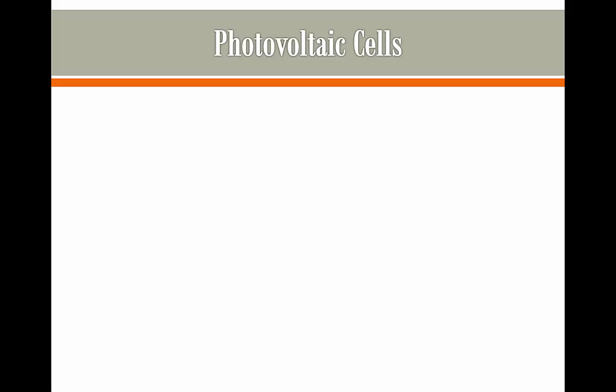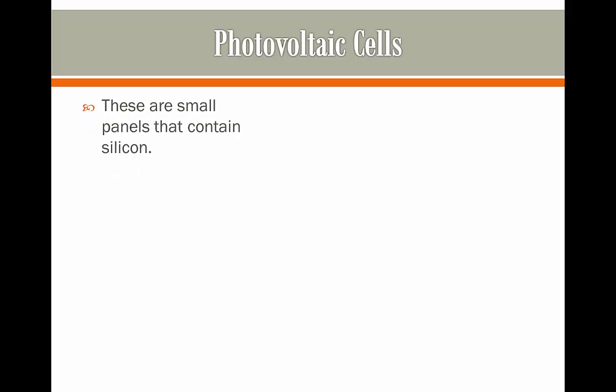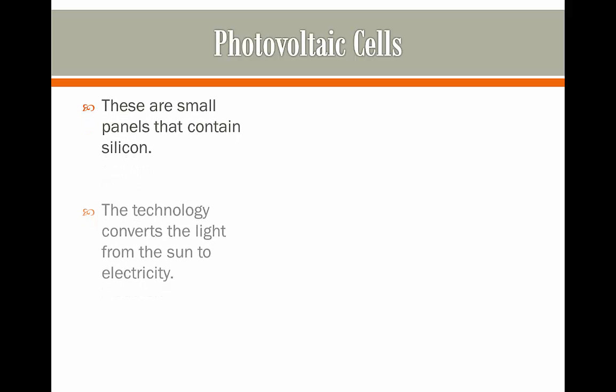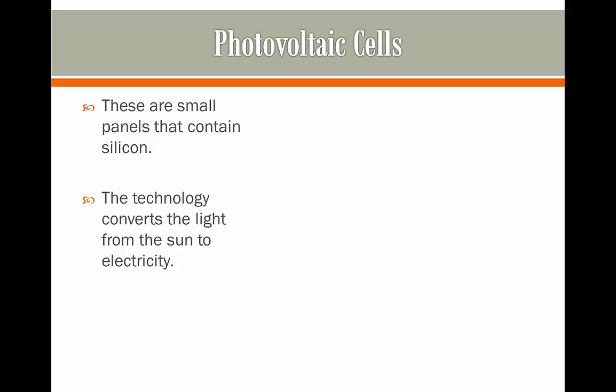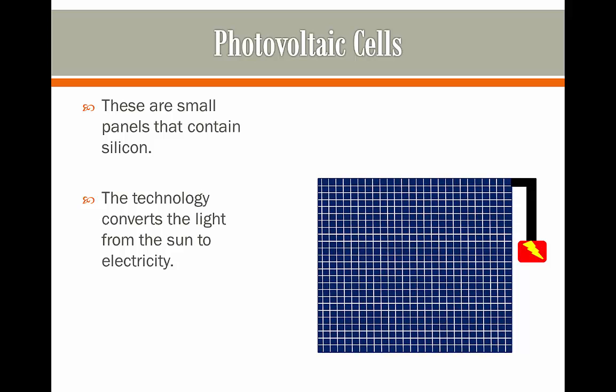Now we'll look at photovoltaic cells. These are small panels that contain silicon. The technology in these cells converts the light from the Sun into electricity. You don't have to know exactly how it happens at AS level — you just have to know that the silicon does this.